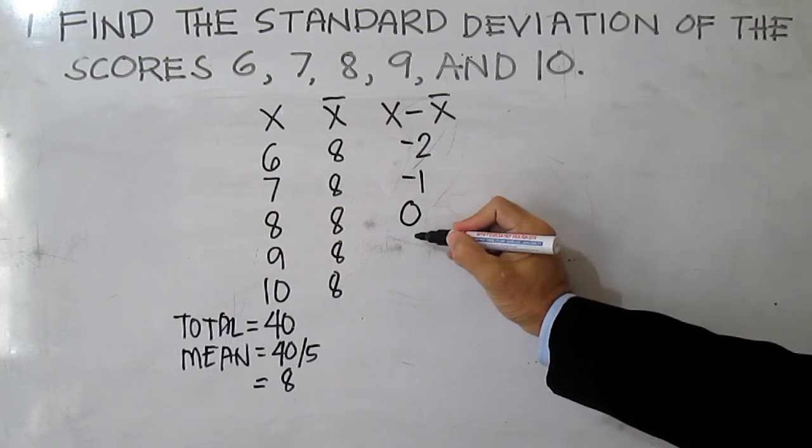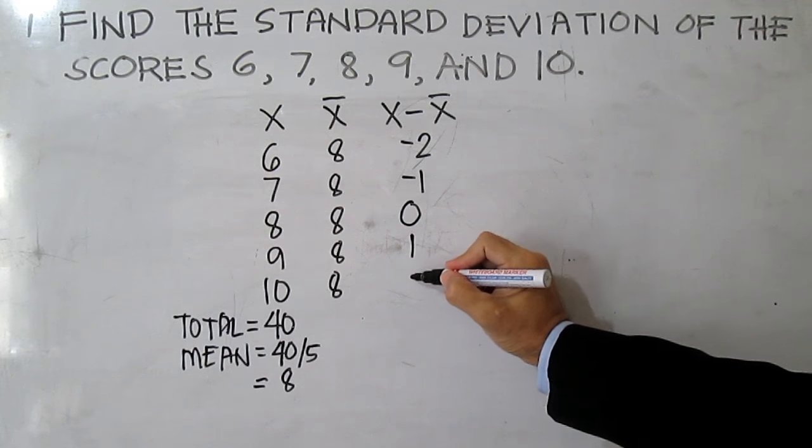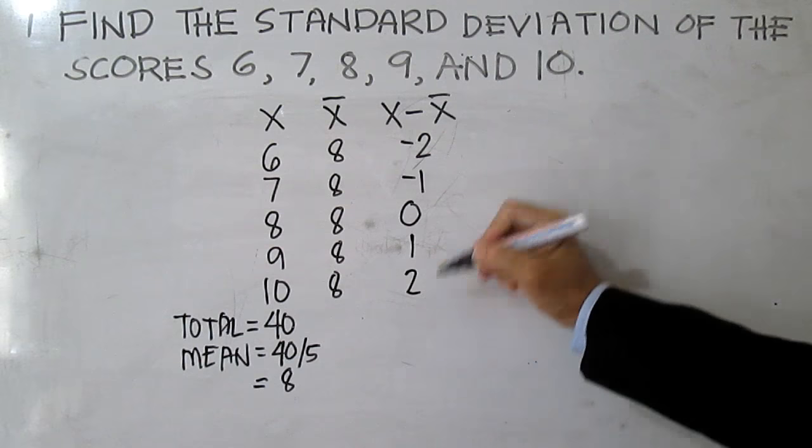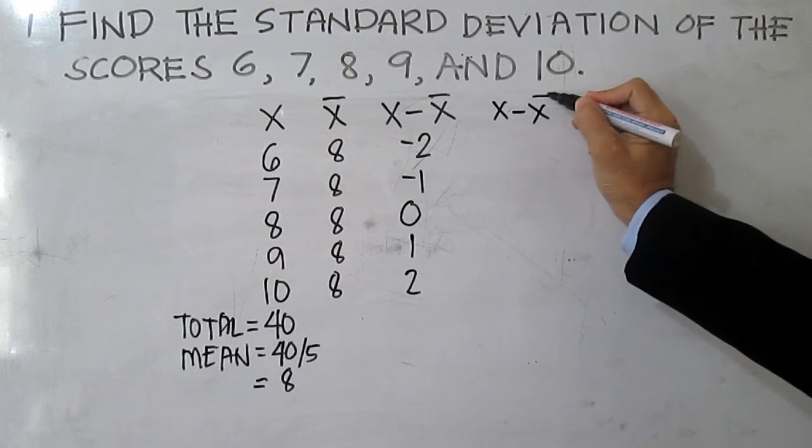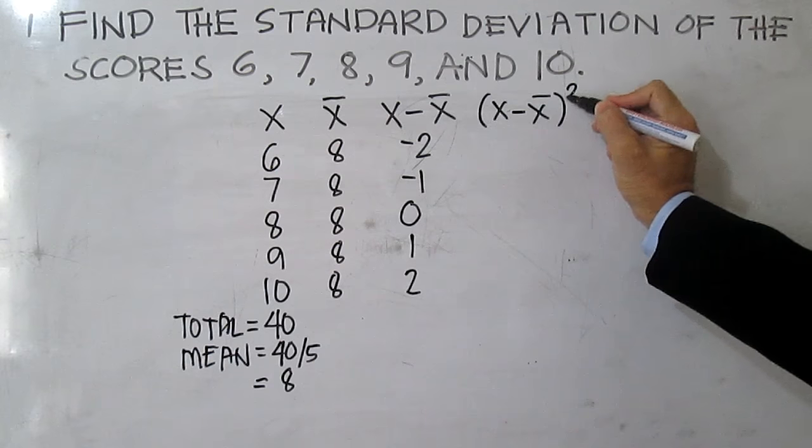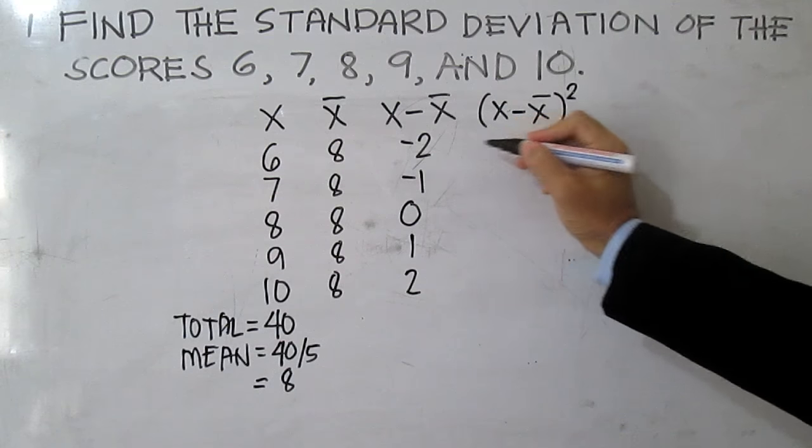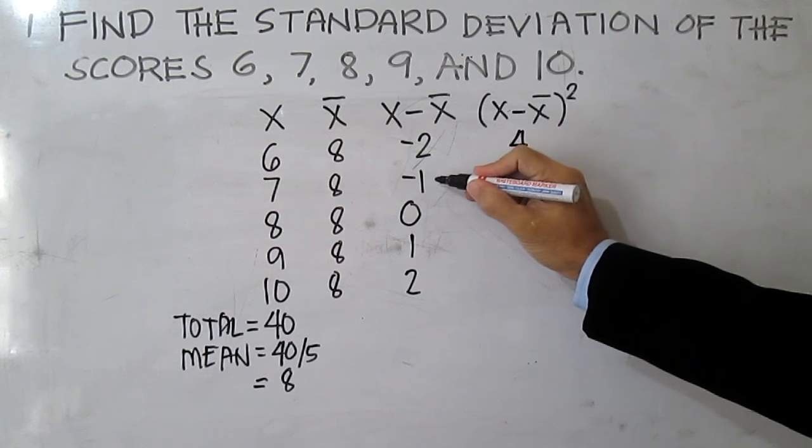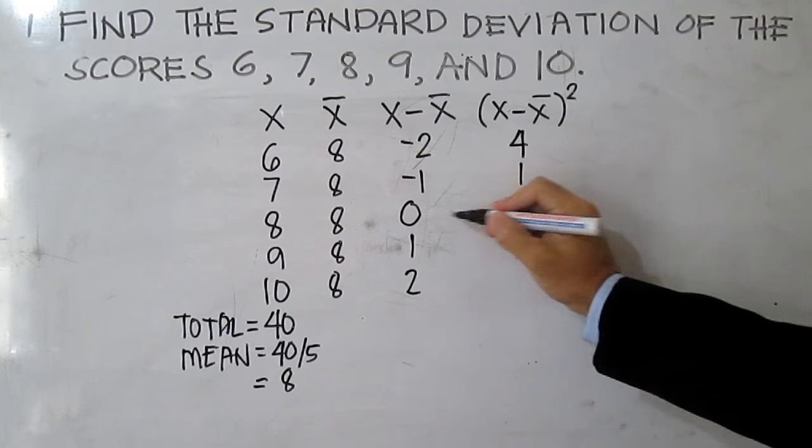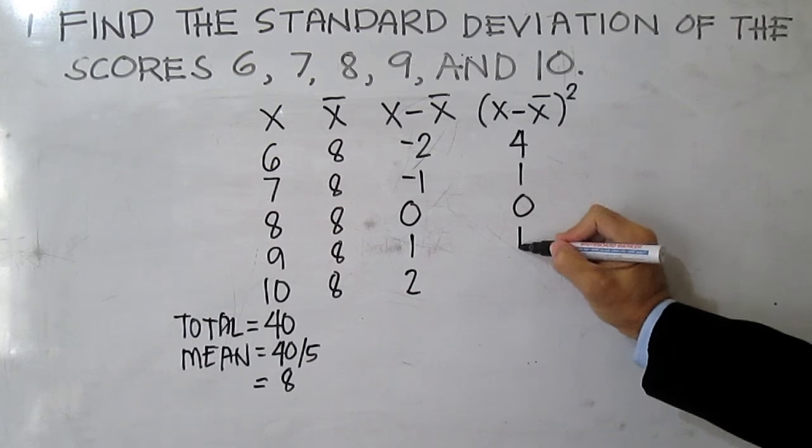10 minus 8 is 2. Then you square the deviation from the mean. Negative 2 times negative 2 is 4, negative 1 times negative 1 is 1, this is 0, 1 squared is 1, 2 squared is 4.